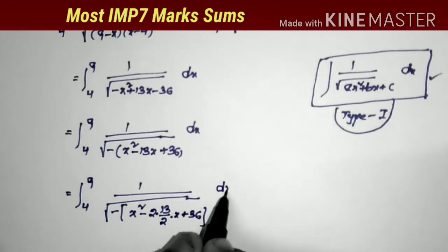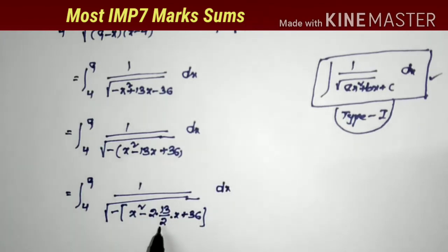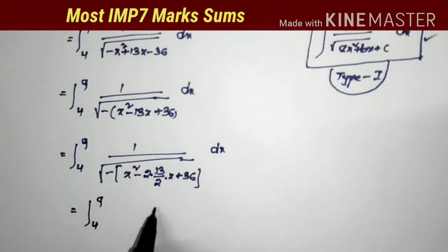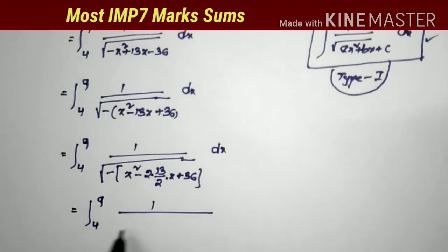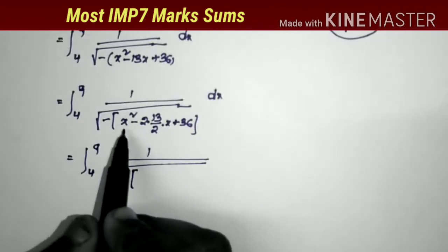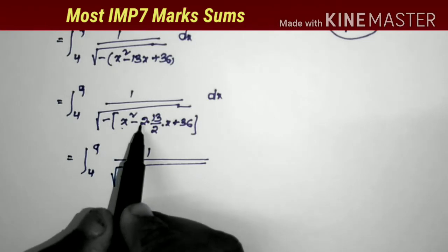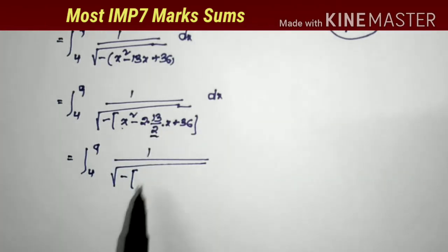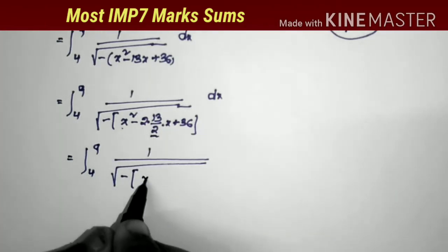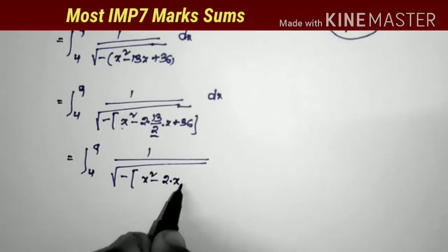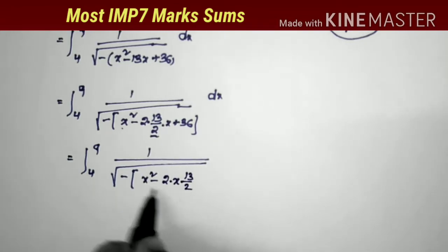After taking the x squared coefficient common, we apply the term 2 by 2 to the middle value. This equals integral from 4 to 9 of 1 by square root of minus of the expression, which is now clearly in the form of a squared minus 2ab, where b equals 13 by 2.